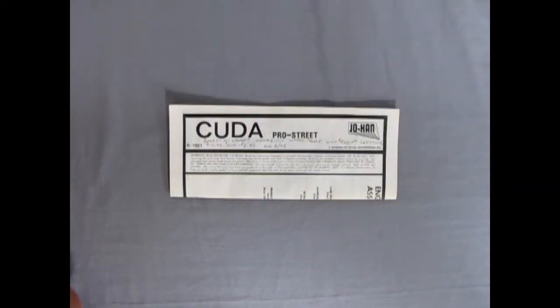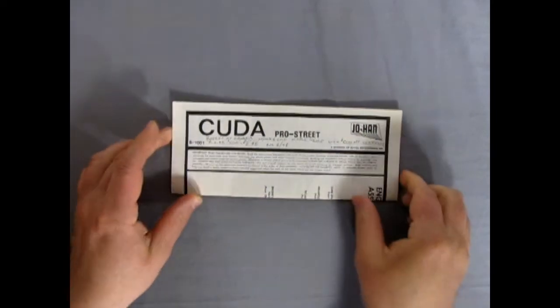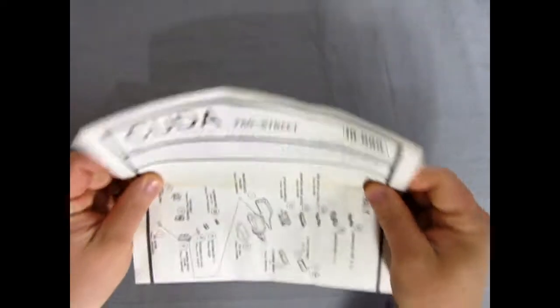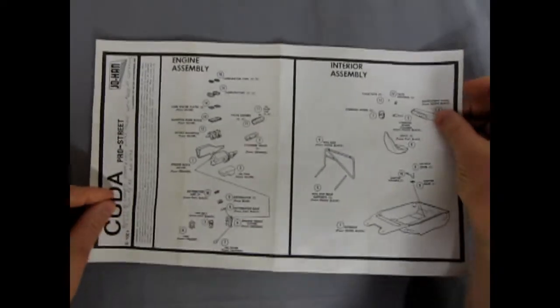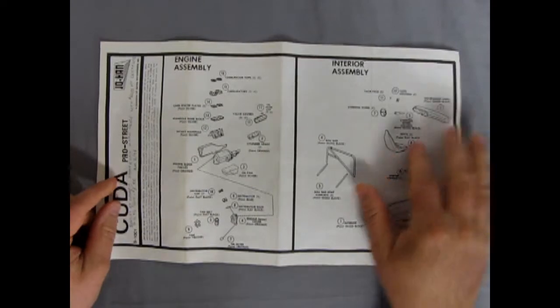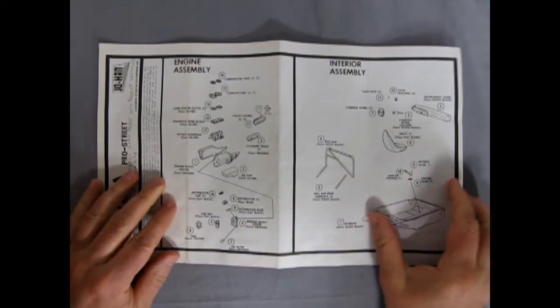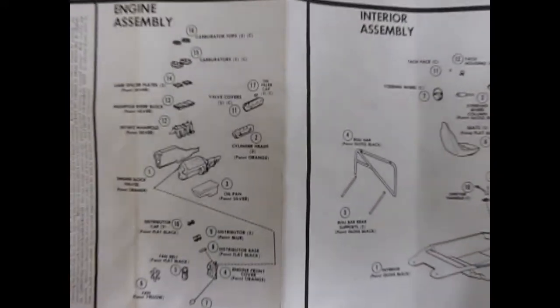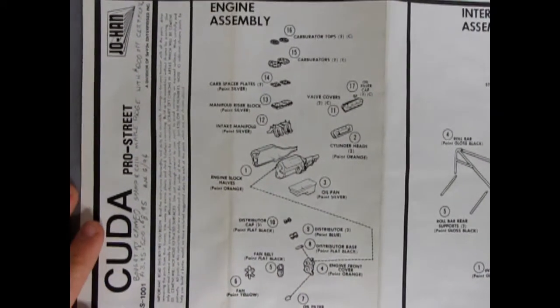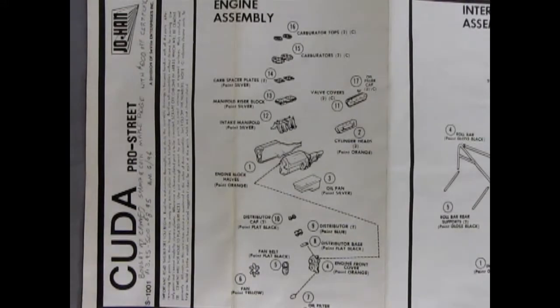Here's our instruction sheet for our CUDA Pro Street. And this is the typical Johan one-page instruction sheet, which folds all the way out like this, which is quite typical for Johan, of course. So what we have here, if we just zoom in, is we've got our first panel, which is the engine assembly. Can you dig it?